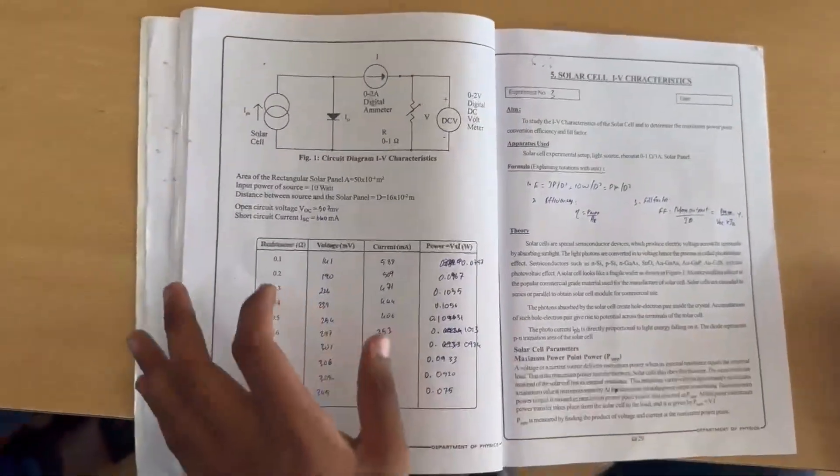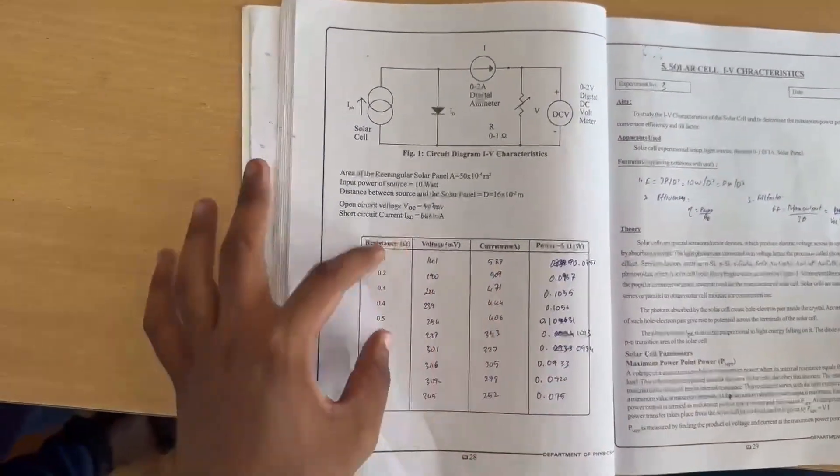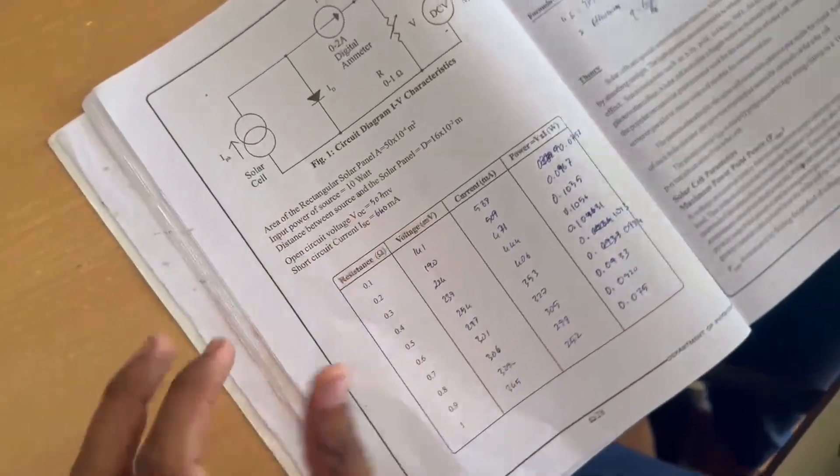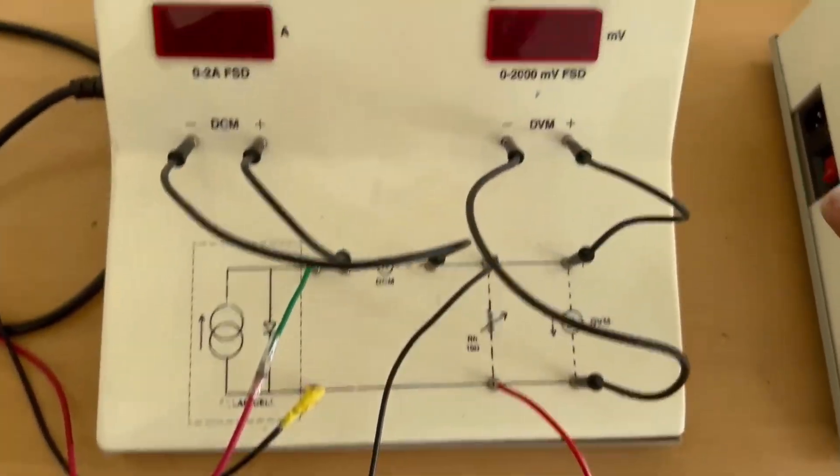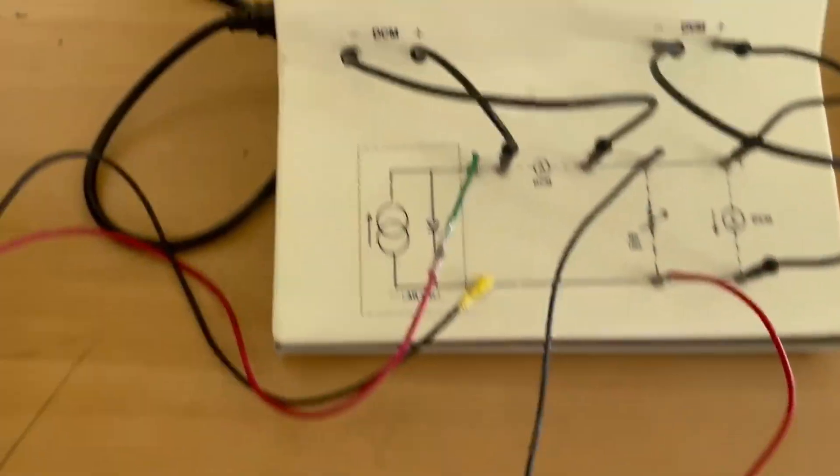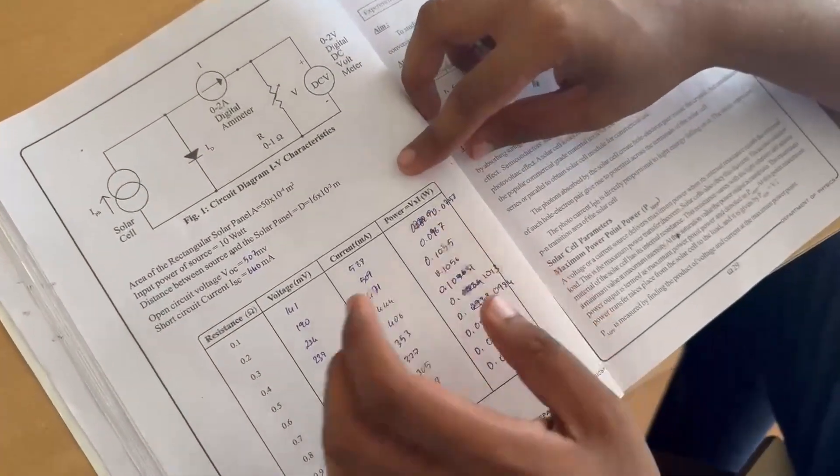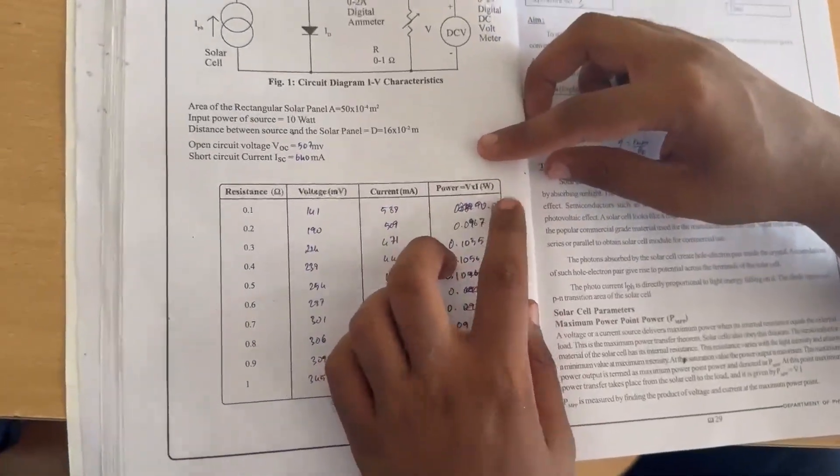For this experiment, we have four tabular columns: the resistance which is set in the resistance box, the voltage shown in the voltmeter in millivolts, the current shown in the ammeter in milliamperes, and the power calculated using the formula V×I in watts.